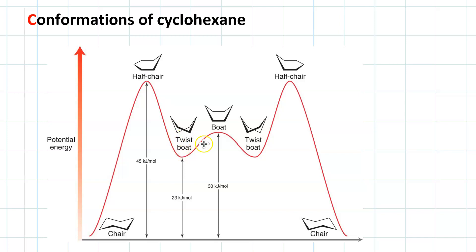Then a twist boat. Then a boat, which has lots of strain because of interference between hydrogens here and here. Then the opposite twist boat, the opposite half-chair, and finally, the other chair.